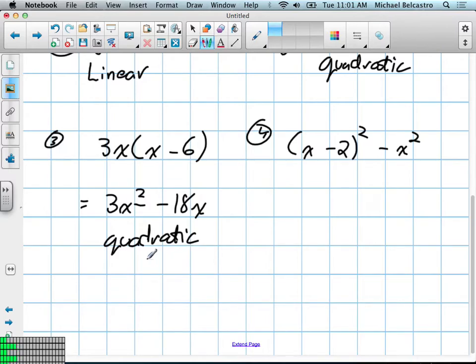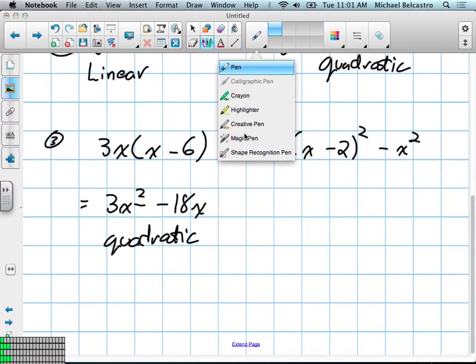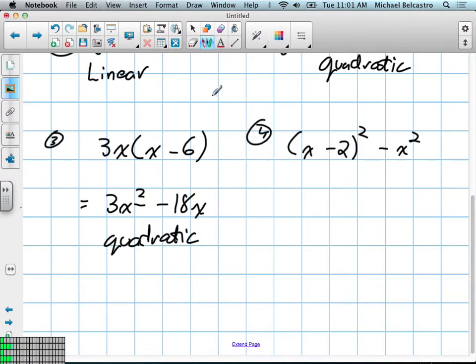And finally, the last one, this can be considered a factored form, this is usually called vertex form with quadratics. We're going to have to distribute this. Anyone know off the top of their head what it's going to be - linear, quadratic, or neither? Neither? Does anyone think quadratic? Does anyone think linear? Okay, so let's work this out.